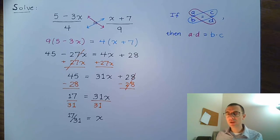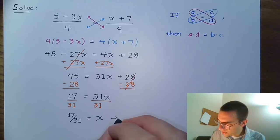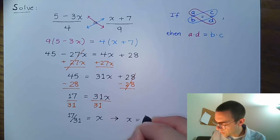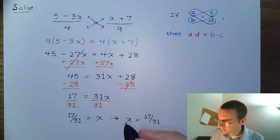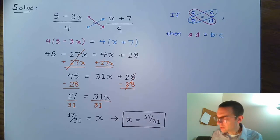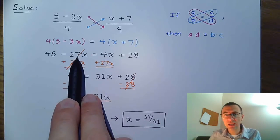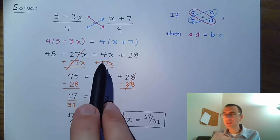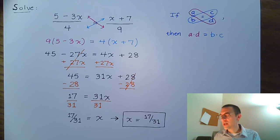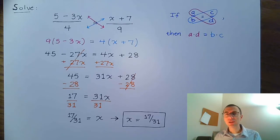If you don't like having x on the right side of the equation, know that this is the same thing as saying x equals 17 over 31. If you had moved the 4x to the left side instead of moving the 27x to the right, you would have gotten the exact same answer, just with an extra step dealing with a negative. That's why I tend to move terms so that I have a positive lead coefficient — it just makes things easier.